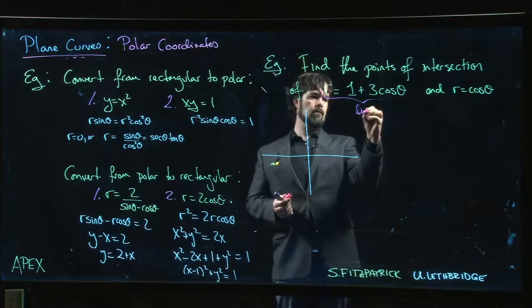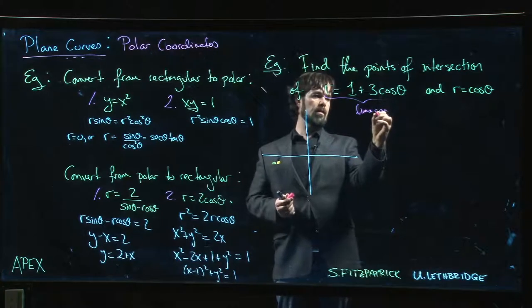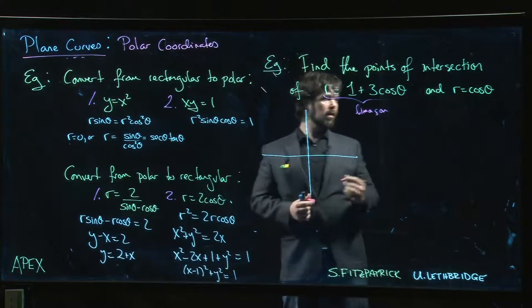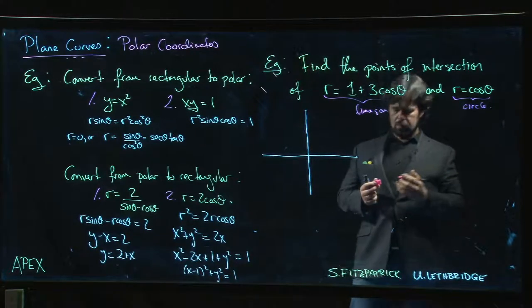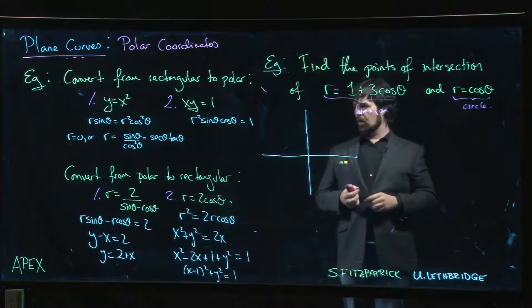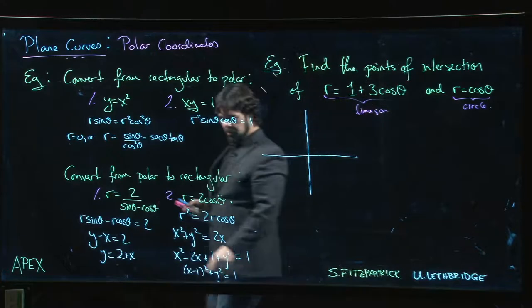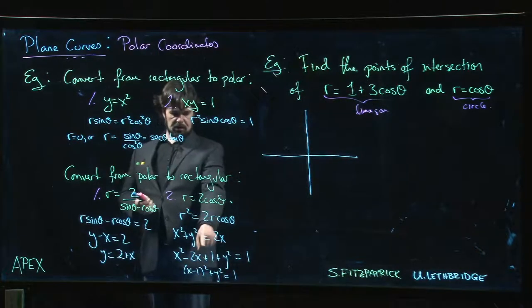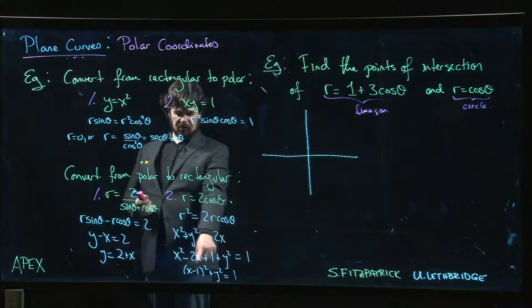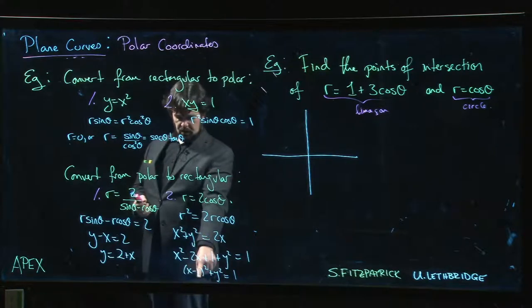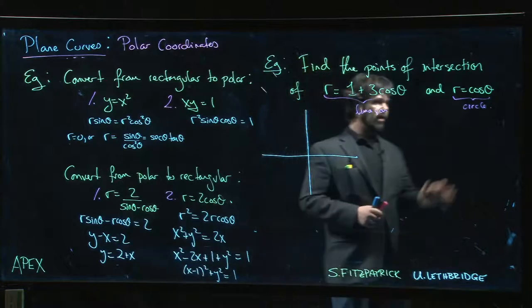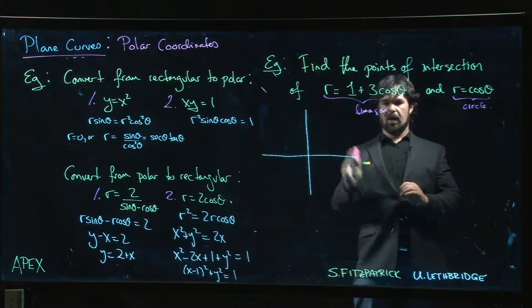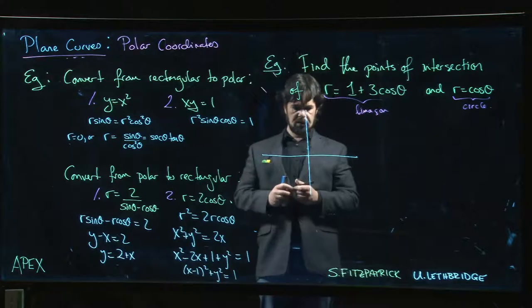Here, this is a lima song. This is just a circle—without the two, this will just be X, and you'll get a quarter here. It's a circle of radius one-half centered at one-half. We can plot the two curves.